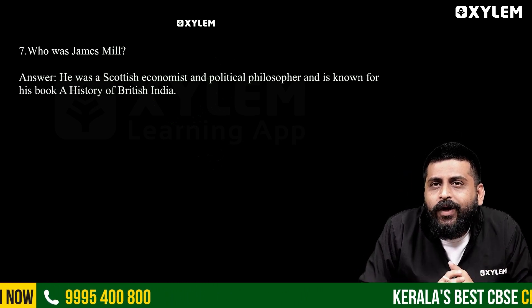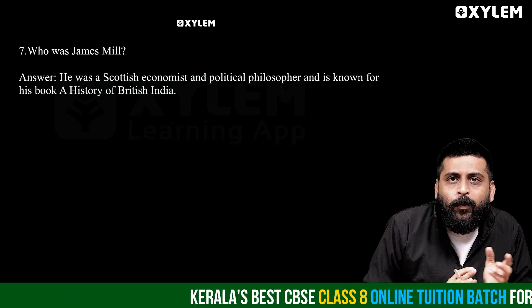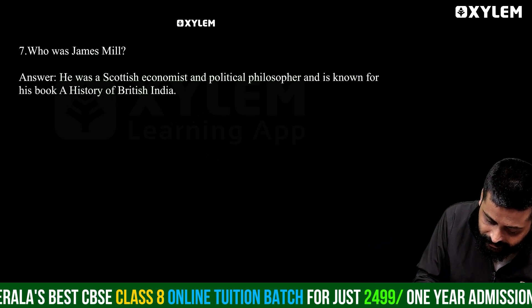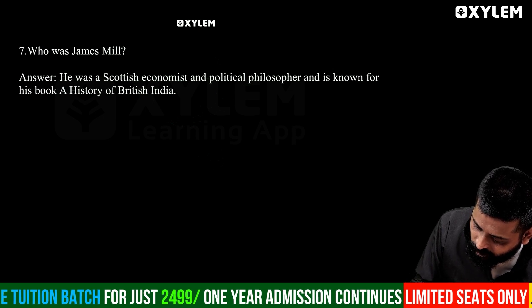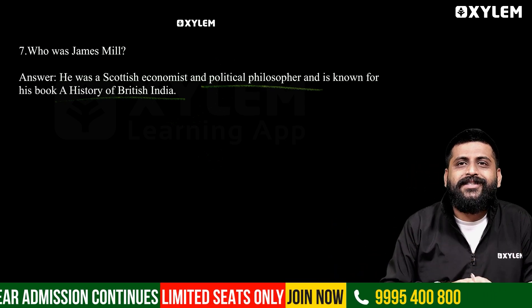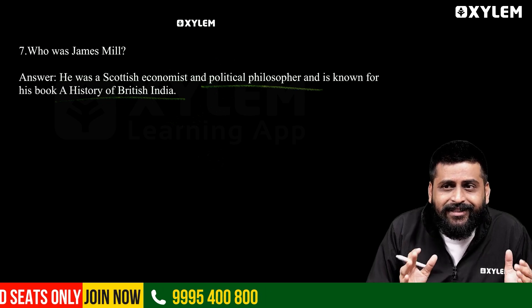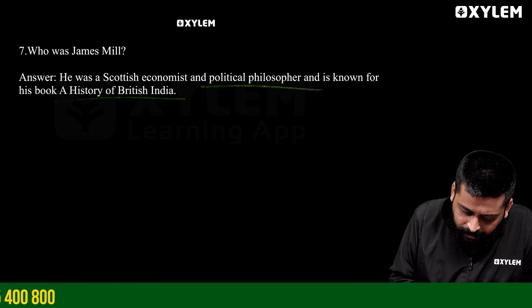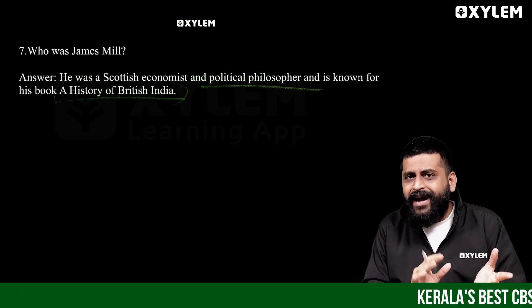He was a Scottish economist and political philosopher, James Mill, known for his book The History of British India. He was a famous person in the administrative and economic perspective of British India.